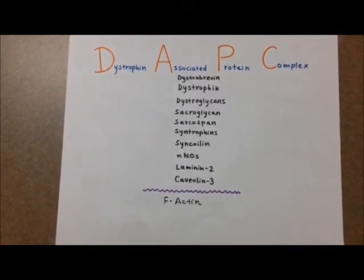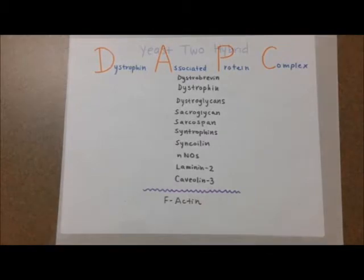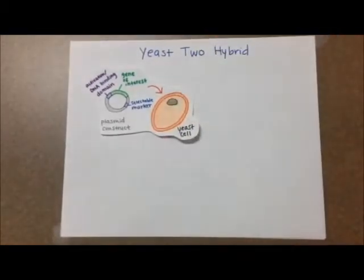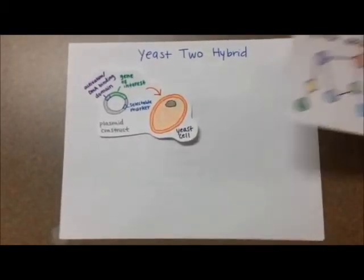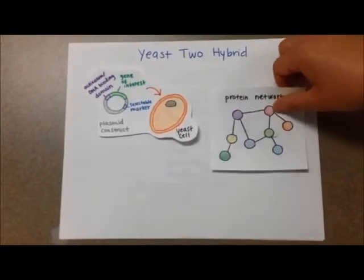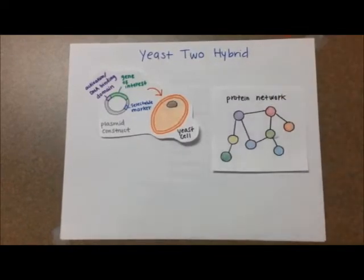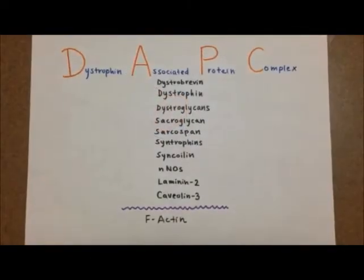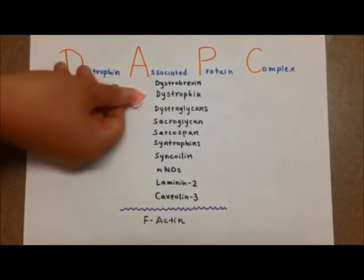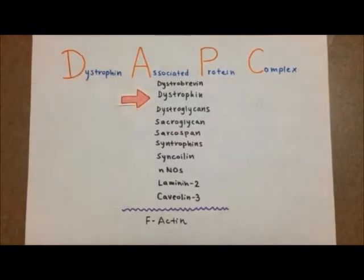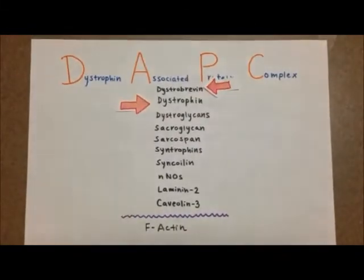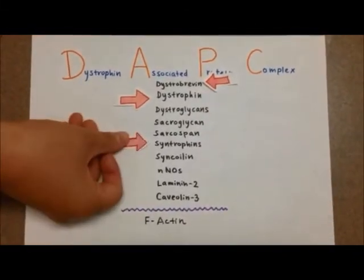Here are a few of the most important proteins involved. The proteins we will focus on are dystrophin, dystrobrevin, centrophin, and f-actin.